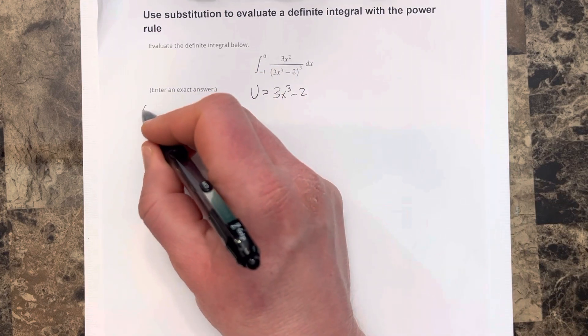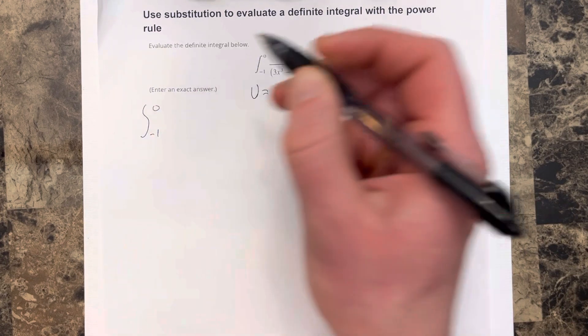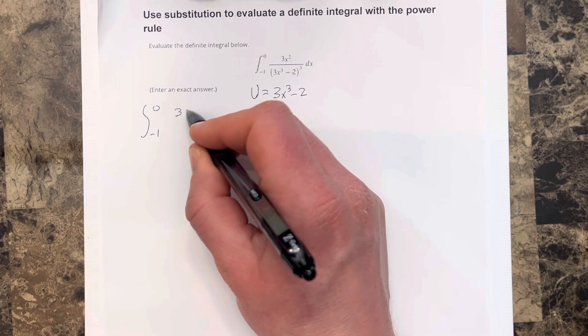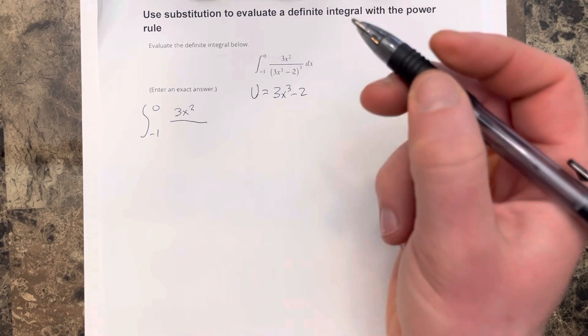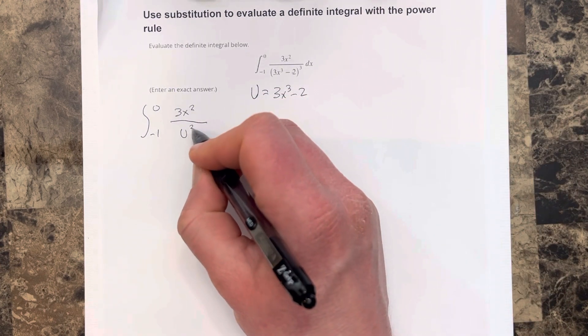So then I would rewrite this as the integral from negative 1 to 0 of 3x squared over u cubed dx.